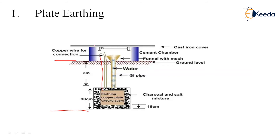A cast iron cover is kept over the pit. The standard procedure is: dig to a minimum of 3 meters deep, place a copper plate or galvanized plate — dimensions vary depending on the type of plate. Fill with charcoal and salt mixture. The lower layer of mixture should be present first, then the copper plate, then the complete mixture again. Providing a funnel is better to keep moisture intact throughout, especially in the summers. This was the plate earthing.